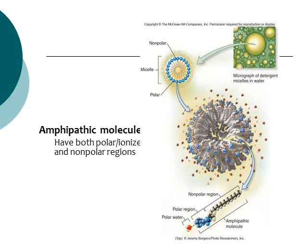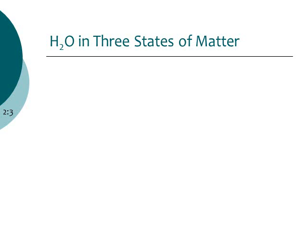Then we have a third class of molecules called amphipathic molecules. These molecules have a polar or ionic region on one end, so they're hydrophilic on one end, and on the other end they have nonpolar regions, making that side hydrophobic. For right now you just need to know amphipathic molecules have both hydrophilic and hydrophobic regions on the same molecule. We'll talk more about this in chapter three when we look at phospholipids, which make up cell membranes.